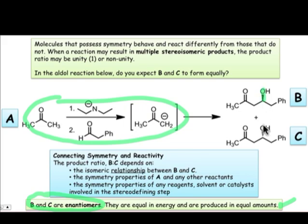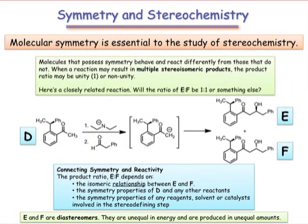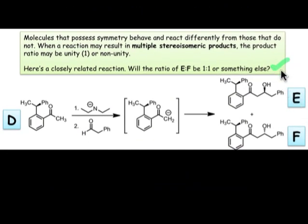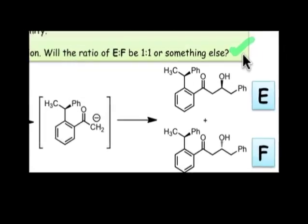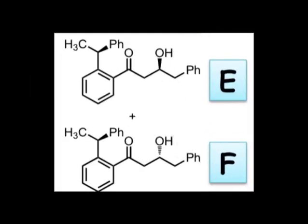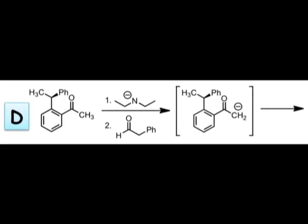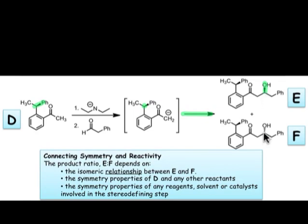What about the closely related crossed-Aldol reaction shown here? Will E and F be formed in equal amounts or something else? E and F are diastereomers, so we might expect that they would have different energies. And having different energies, we would expect that they would form in unequal amounts. Where does that bias in reactivity come from? We start with a reactant D that already has a stereocenter, and so the enolate resulting from D will end up biasing the stereodefining step to favor one configuration over the other.